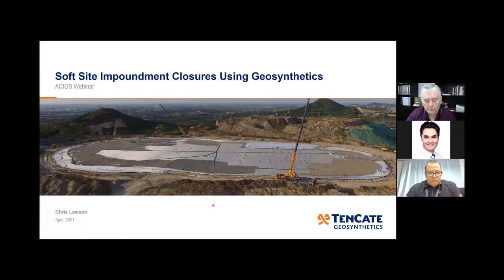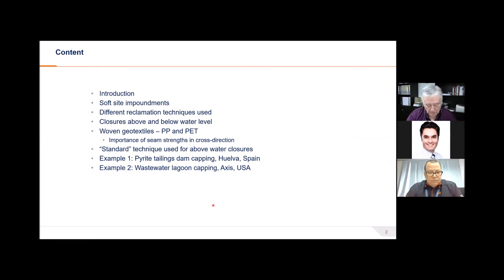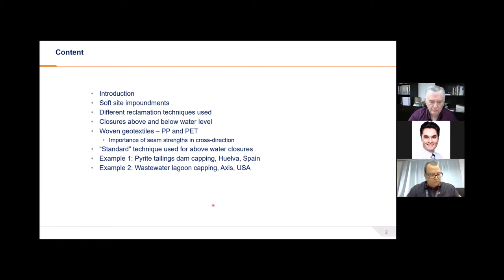The content of my talk will include a basic introduction, soft site impoundments in general, different reclamation techniques, closures above and below water level, woven geotextiles both polypropylene and polyester, and the importance of seam strengths in the cross direction. We'll look at a standard technique used for above water closures, and then I'll give two case study examples — one from Spain and one from the United States.